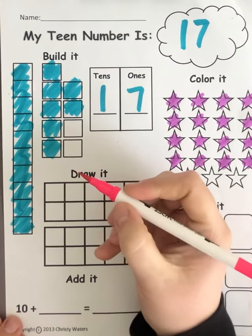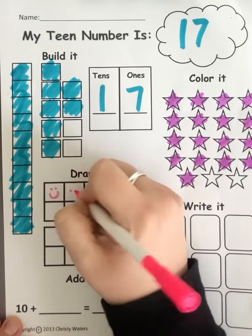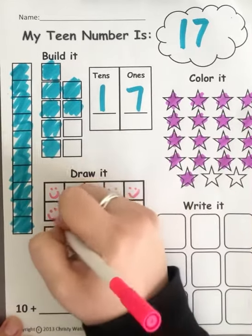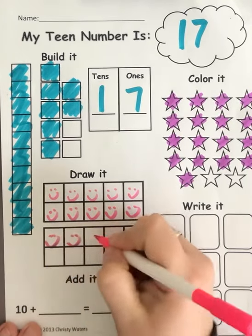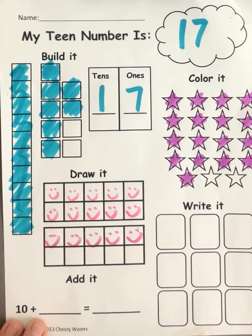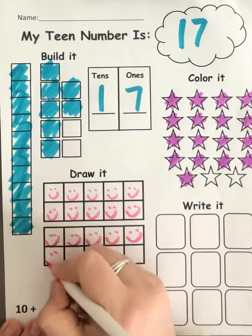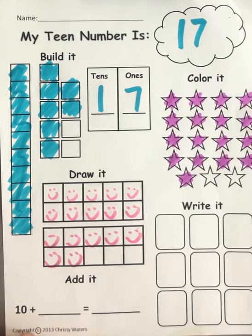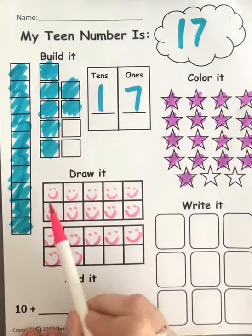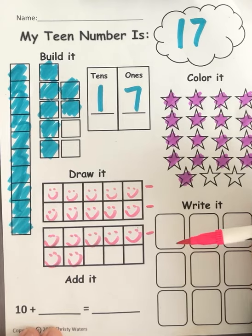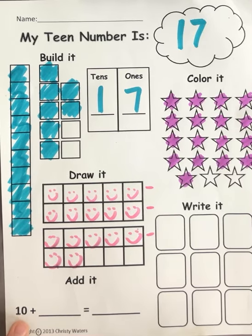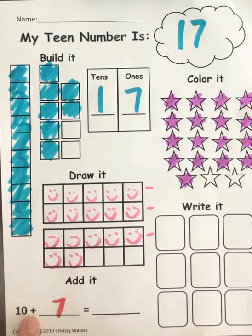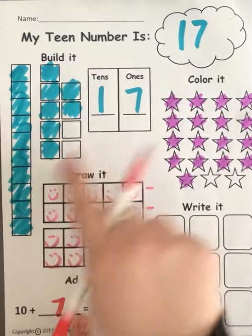I'm going to do 17 happy faces. Remember, I don't need to count in my 10 frames because I know if I fill a 10 frame, I just have 10. Now I need seven more because 10 and 7 make 17. One, two, three, four, five, six, and seven. And if you've been counting and practicing counting by fives — I know that this is five, so I have five, 10, 15 — now I need to count by ones: 16, 17. So how many did I have over here? I had 10 plus seven ones equals 17 all together.